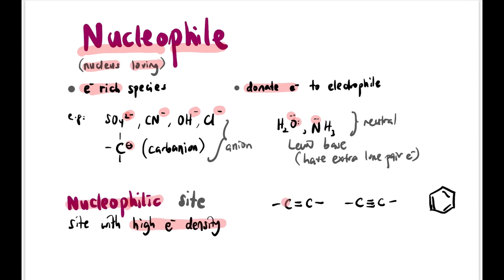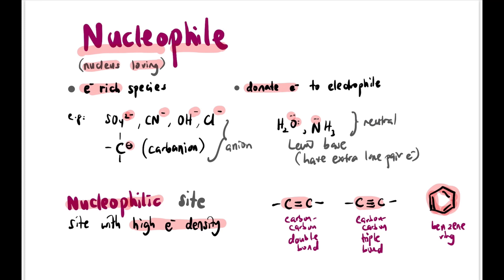There is also the term nucleophilic site — a site in an organic compound with high electron density. This usually occurs at multiple bonds such as C=C, C≡C, and benzene rings. Remember these three as nucleophilic sites.